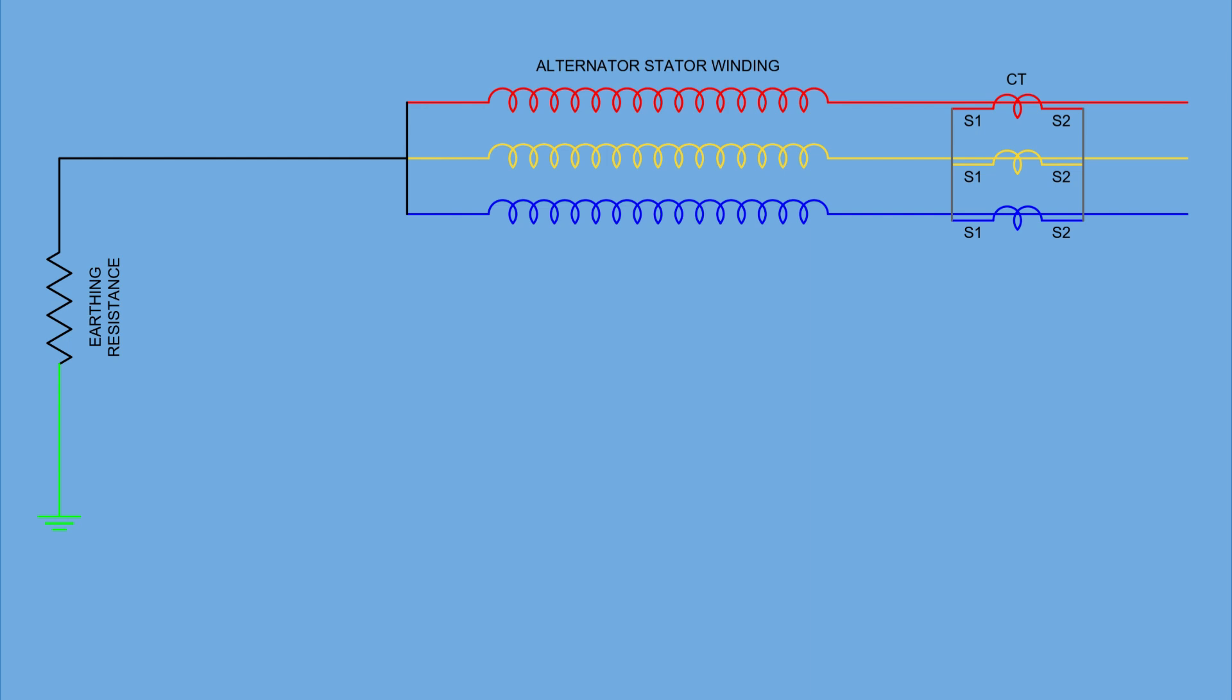But that's not all. There's one more current transformer placed in the neutral conductor, which connects the star point of the alternator to earth, typically through an earthing resistance. A relay is connected across the combined secondaries of these current transformers, and this is where the key action takes place. The protection zone is defined between the line CTs and the neutral CT. So, if any earth fault occurs within this zone, it will be detected by this arrangement.